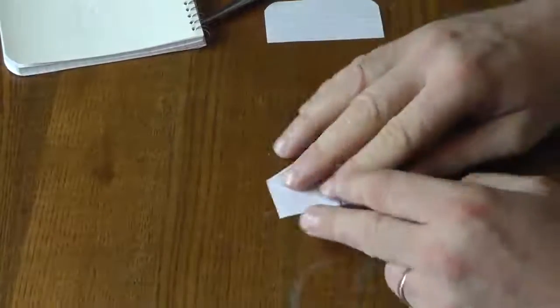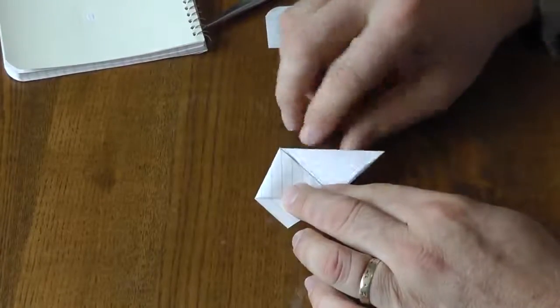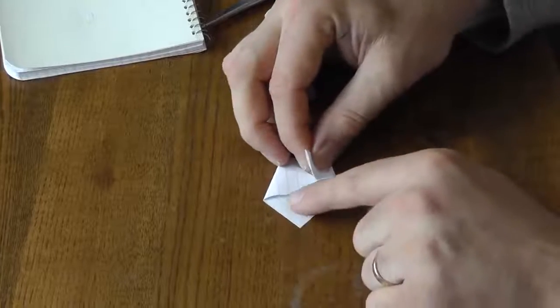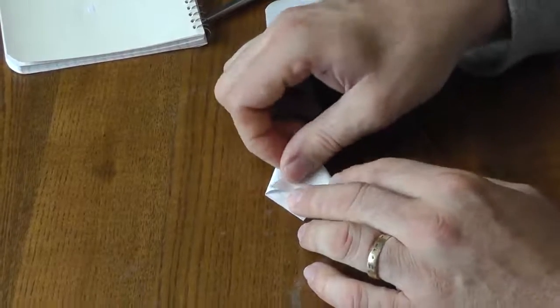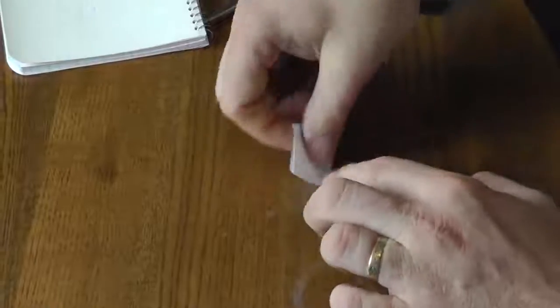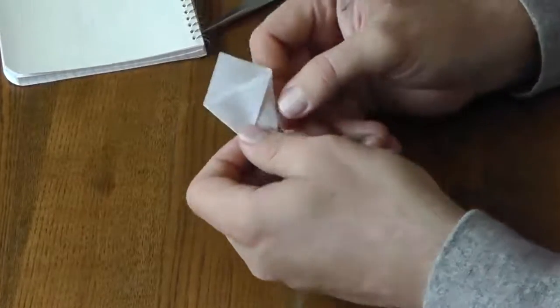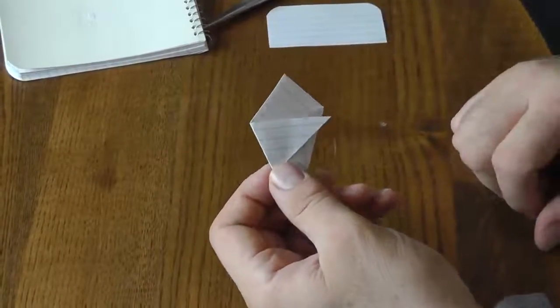And then I turn it around and take this other corner here, this other side, and bring it across and match this edge here, like that. So what it does is it gives me this kind of basket looking little envelope.